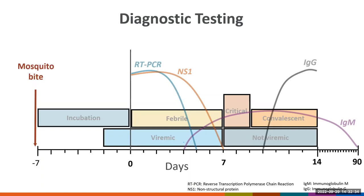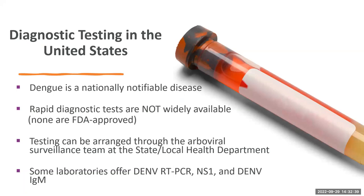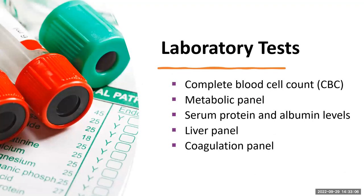Dengue is a national notifiable disease, and if you suspect dengue, you should report the case to your local health department. Rapid diagnostic testing is not available, but RT-PCR, NS1, and IgM testing can be arranged through your health department, who can help determine the recommended test based on your patient's symptom onset. Some private labs also have dengue testing available. During the first encounter with a suspected dengue patient, obtain a complete blood cell count to get a baseline hematocrit, platelet count, and leukocyte count.